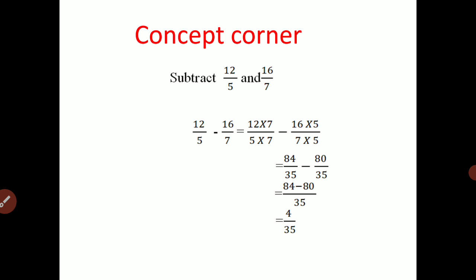The next example: subtract 12 upon 5 and 16 upon 7. Here 12 upon 5 is one rational number and 16 upon 7 is another. The denominators 5 and 7 are different. While subtracting these two rational numbers, what do we have to do? First, we have to find out the LCM of these two numbers.